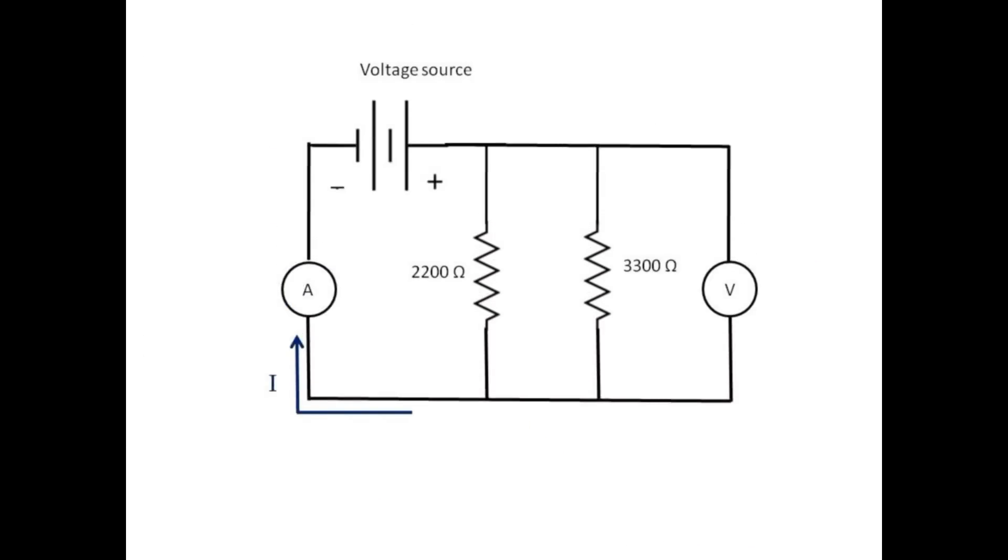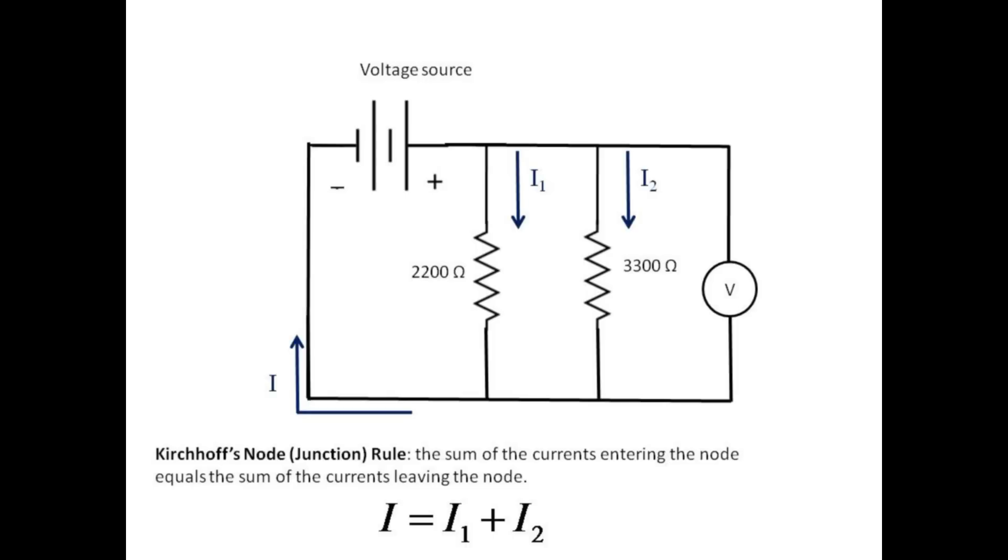We now connect a voltage source and use an ammeter to measure the total current I. Then we measure the current I1 through the first resistor. Finally, we measure the current I2 through the second resistor. According to Kirchhoff's node or junction rule, the sum of the currents entering a node equals the sum of the currents exiting the same node. Thus, I equals I1 plus I2.